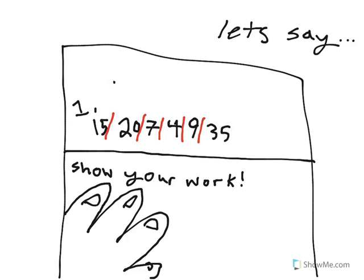So, let's erase all of that for a second. The numbers that they give you are 15, 20, 7, 4, 9, and 35. And it says, show your work at the bottom.